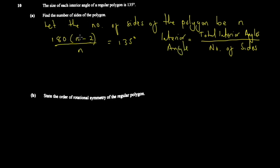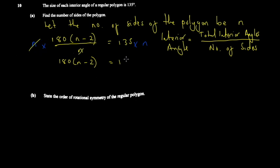So working this out, we write 180(n minus 2) divided by n equals 135. Multiplying both sides by n to remove fractions gives 180(n minus 2) equals 135n. Expanding gives 180n minus 360 equals 135n. Putting the n terms together: 180n minus 135n equals 360, so 45n equals 360.